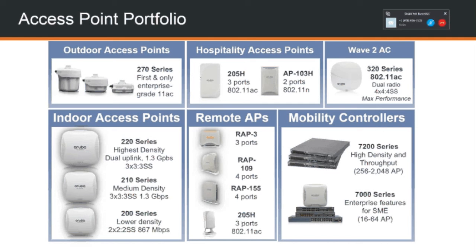In the middle there, we have remote access points. A controller can handle access points inside an organization as well as in folks' homes or remote locations for a teleworker solution. The 205H, if you get a stand, can essentially act as a remote AP as well. Over all of these, I recommend the 205H — I have one myself and love it. You can put it on a desk and it provides great Wi-Fi signal. The other access points — the 220, 210, and 200 series — are geared to be ceiling-mounted, and if you put them on a wall they won't propagate RF nearly as well.